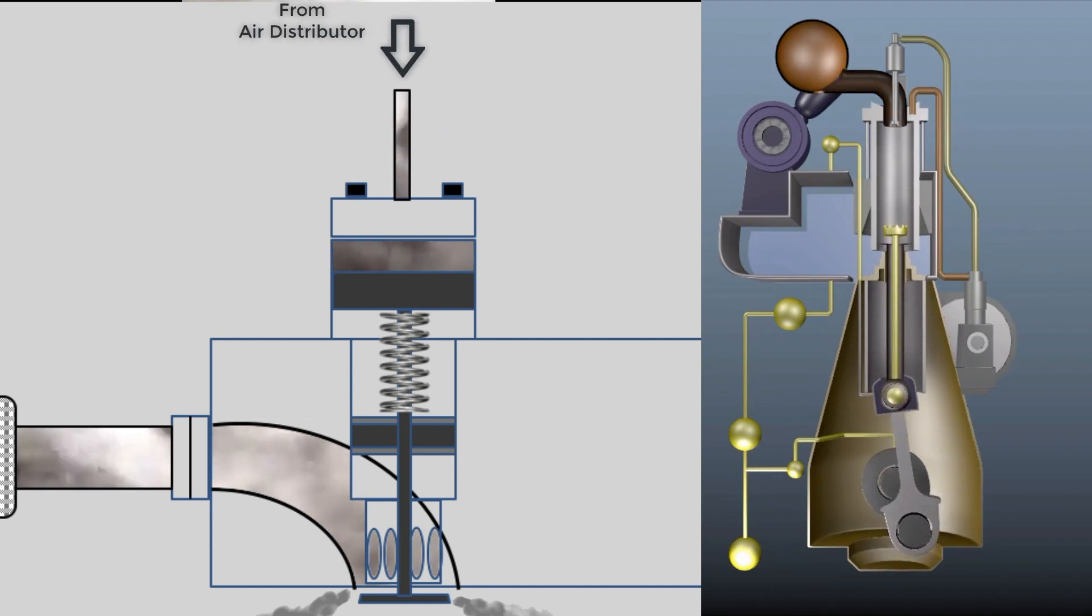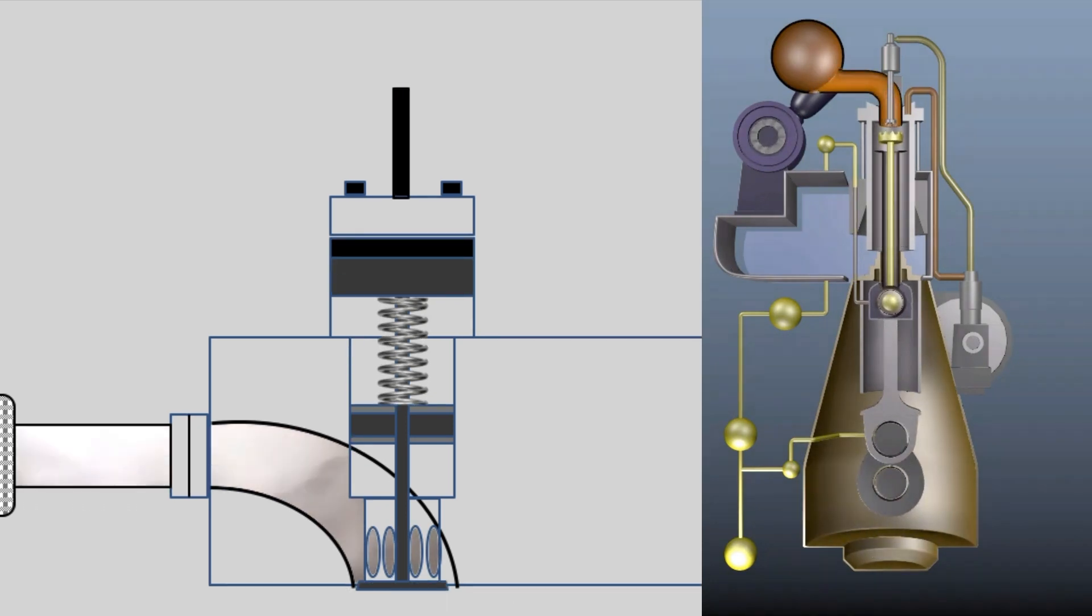When the air signal from the air start distributor is vented, there will be no more air pressure on top of the starting air valve, which means the spring will close the valve.